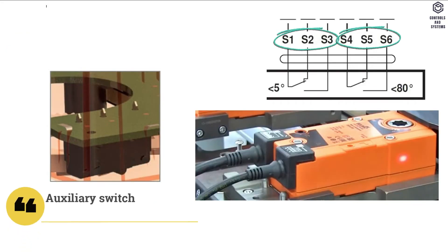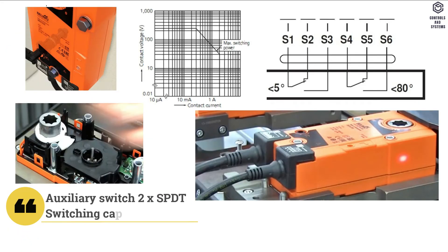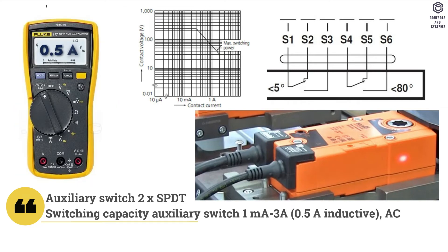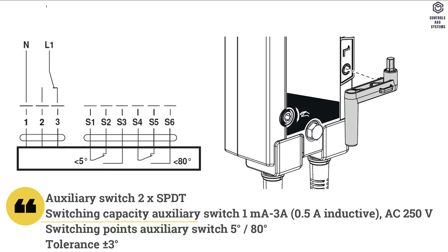2 SPDT auxiliary switches available. Switching capacity auxiliary switches 1 milliamp to 3 amps, 0.5 amps inductive, at AC 250 volt. Switching points auxiliary switches 5 degree and 80 degree.